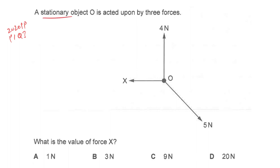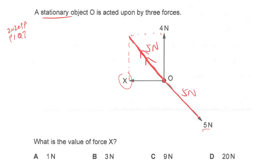In this example, three forces act on object O, which is stationary. According to Newton's first law, if the object is stationary, the net resultant force is zero — all three forces cancel each other. Even though the diagram may not be drawn to scale, the resultant of force X and 4 Newton must be equal in magnitude to 5 Newton and act in the opposite direction, so that the total resultant is zero.